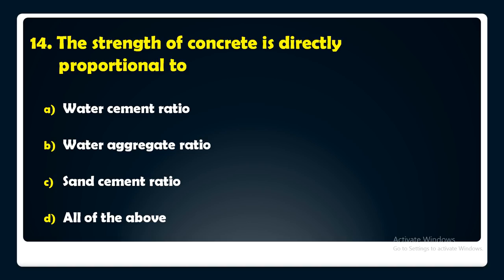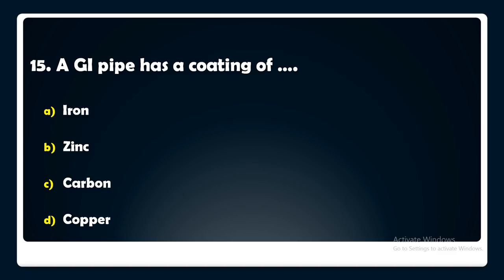A GI pipe has a coating of — iron, zinc, carbon, or copper? The answer is: a GI pipe has a coating of zinc.